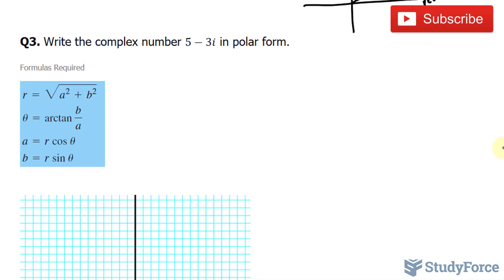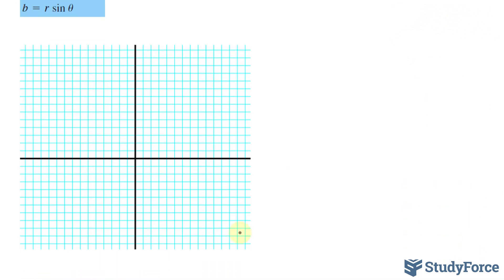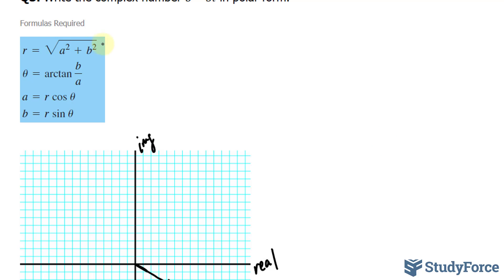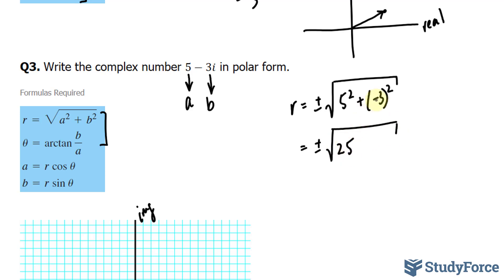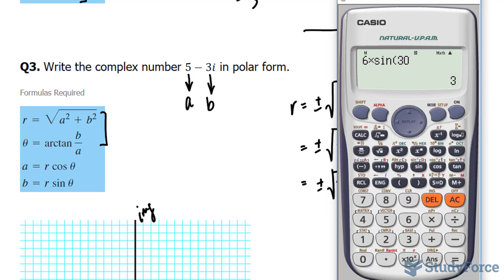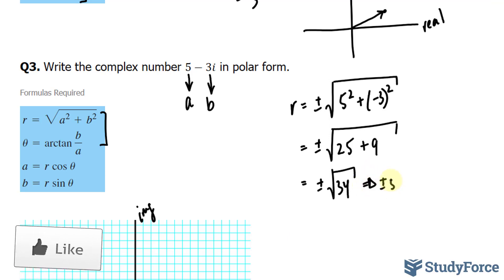Lastly, they want us to write the complex number 5 minus 3i in polar form. Let's start by plotting this. 5 minus 3i means we move 5 units to the right and 3 units down on the complex plane — imaginary axis vertical, real axis horizontal. Our vector represents that point. Using the first two formulas as in question 1, with a equal to 5 and b equal to negative 3, r equals plus or minus the square root of 5 squared plus negative 3 squared. That's 25 plus 9, giving plus or minus the square root of 34, which is approximately plus or minus 5.8.